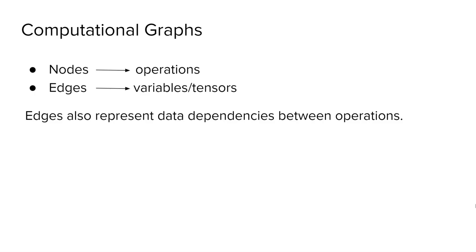Computational graphs represent computation using the graph data structure. The nodes of the graph represent operations like additions and multiplications, while edges represent variables, vectors, and tensors. The edges also represent how data flows from one operator to another.